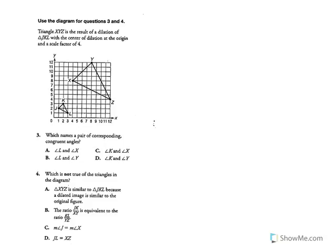Use the diagram for questions 3 and 4. Triangle XYZ is the result of a dilation of triangle JKL with the center of dilation at the origin and a scale factor of 4. The smaller triangle JKL was the original, and there's a scale factor of 4, so the bigger triangle XYZ is 4 times larger. Everything about it is similar except for the size.